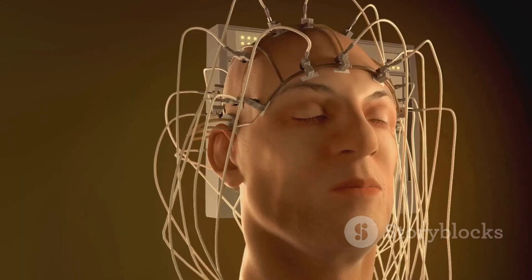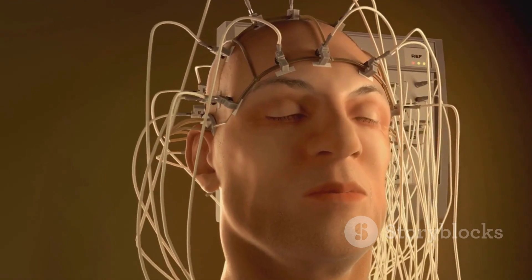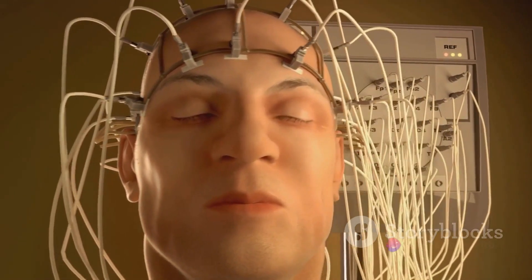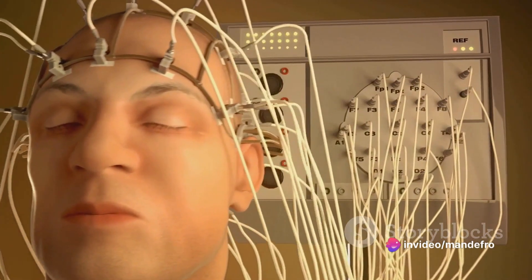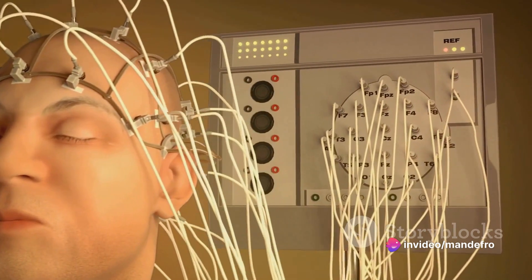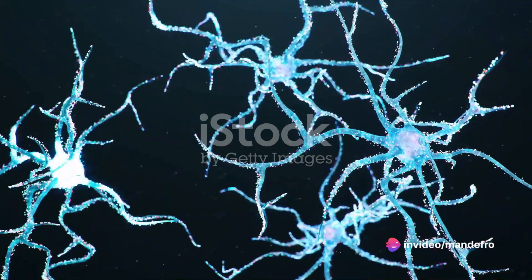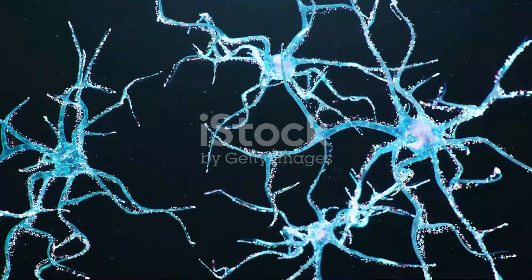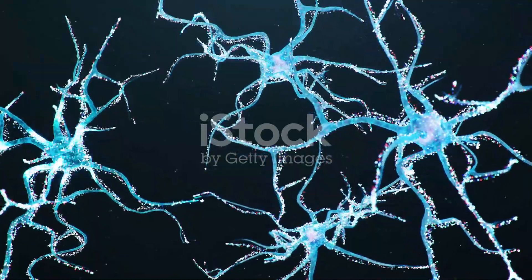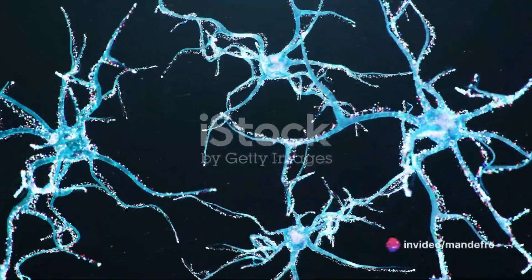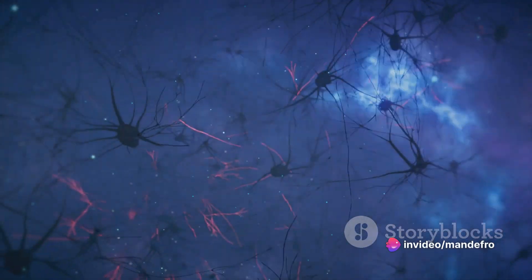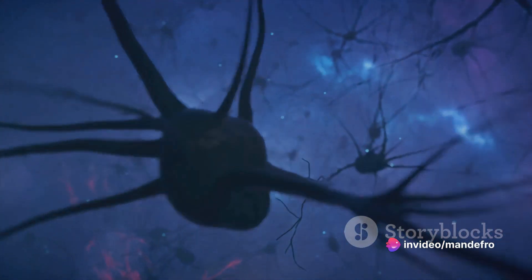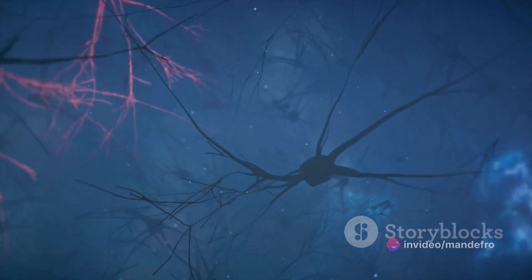This chip is then connected to your brain via tiny threads, thinner than a strand of human hair. These threads are equipped with electrodes that can detect and emit electrical signals in the brain. Now the human brain is a complex network of neurons which communicate through these electrical signals. Each neuron is like a tiny computer that processes and transmits information. Neuralink's electrodes can read these signals, interpret the information, and then send it to a computer.